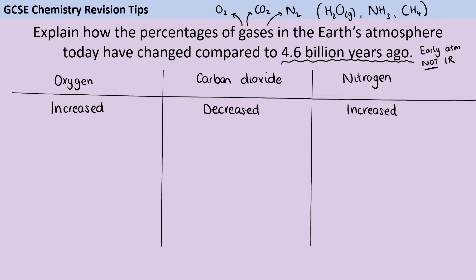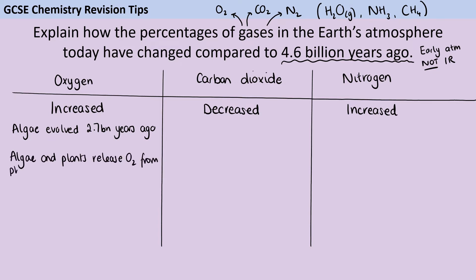You should know that about 2.7 billion years ago the first photosynthetic algae evolved and they started to do photosynthesis. In addition to making glucose, photosynthesis produces oxygen, which is then released by those algae and also by green plants when they finally evolved. So the proportion of oxygen in the Earth's atmosphere increased.